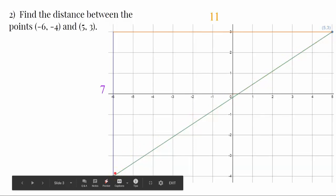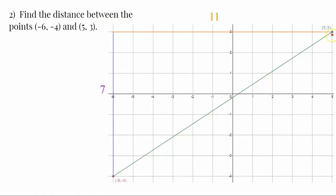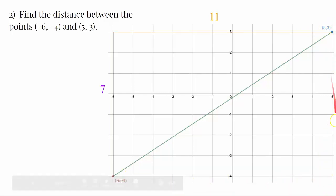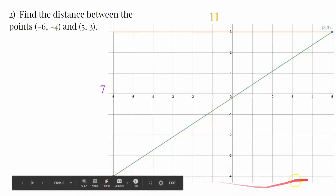This is the hypotenuse of the right triangle that you're going to form. This time, I went up and to the right to form the legs of the right triangle. You could also go down and left. You could make your right triangle down and left.